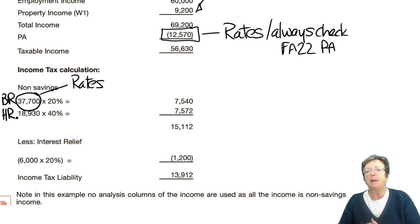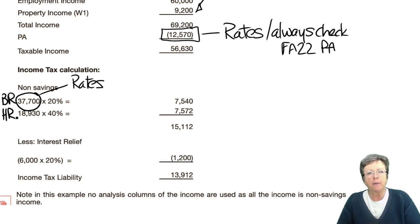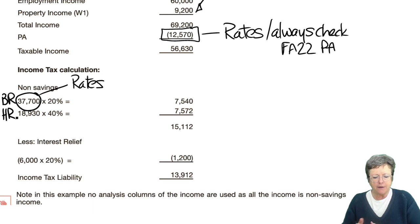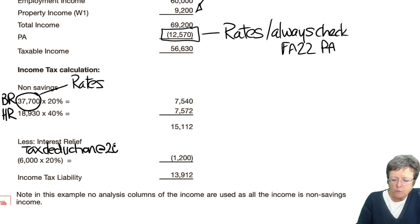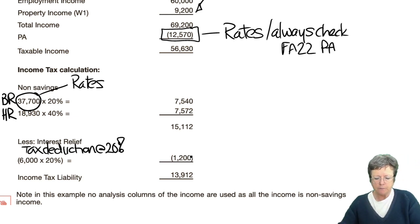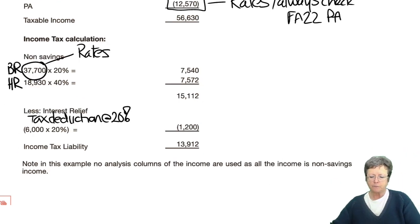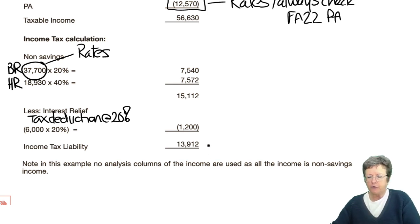Now, one of the expenses in the question was the mortgage interest charge of £6,000, and as we've discussed, that is a tax deduction at basic rate, 20%, giving relief of £1,200, and a tax liability of £13,912.